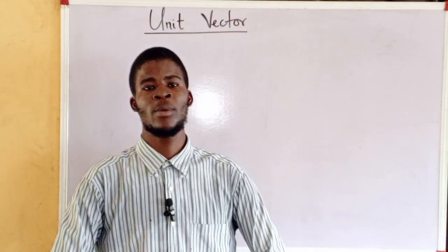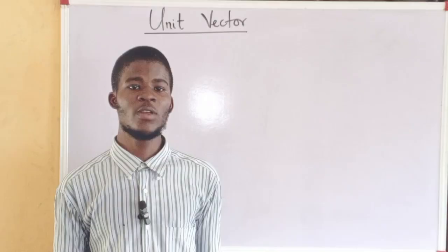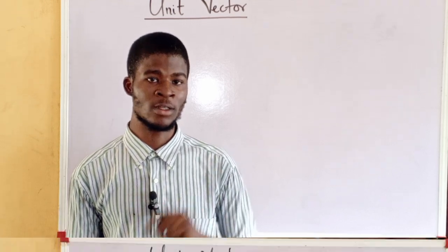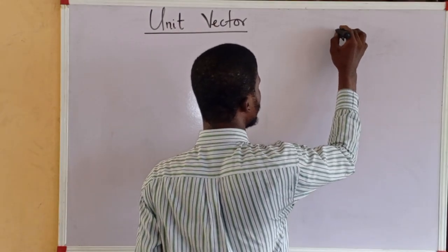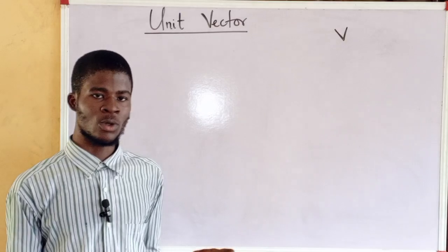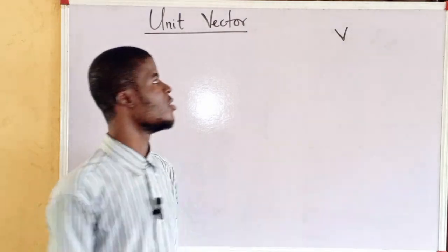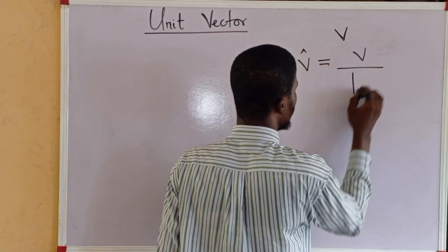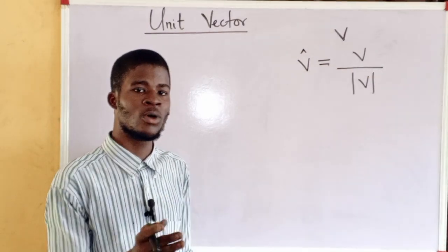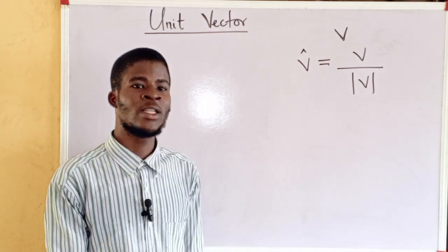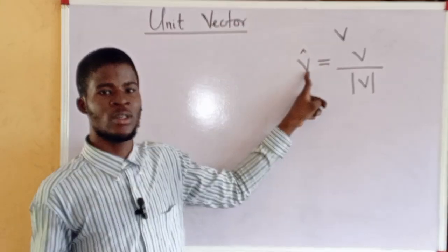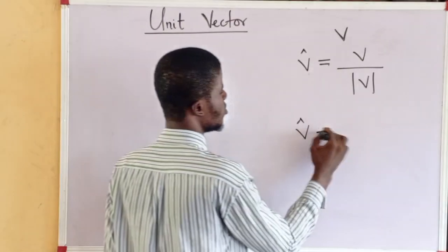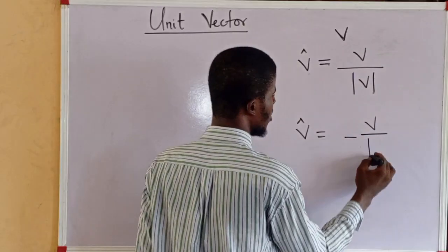In this video we're going to talk about unit vectors. A unit vector is a vector that has a magnitude of one — the length of a unit vector is one. Given a vector V, the unit vector in the direction of V is given by V-hat equal to V divided by the modulus of V. This is the formula for a unit vector in the same direction as or parallel to vector V. The unit vector in the opposite direction is given as minus V over the absolute value of V.